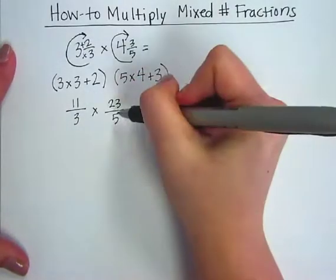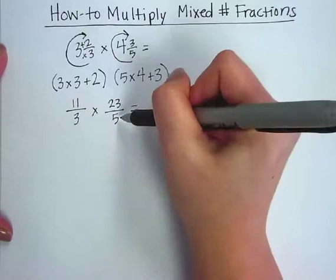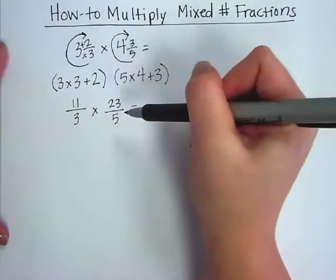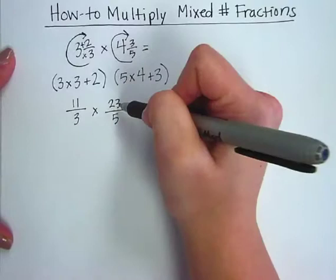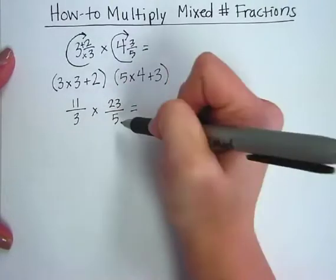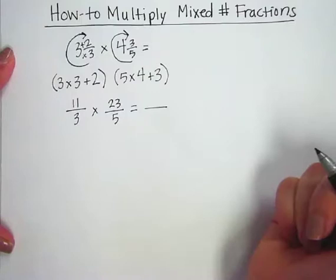Unlike when you're adding or subtracting fractions, the denominators do not have to be the same for multiplying. So I just go ahead, multiply straight across once I have this. 11 times 23 and then I'll do 3 times 5. So 11 times 23 is going to be a little trickier. You can use whatever multiplication method you'd like.